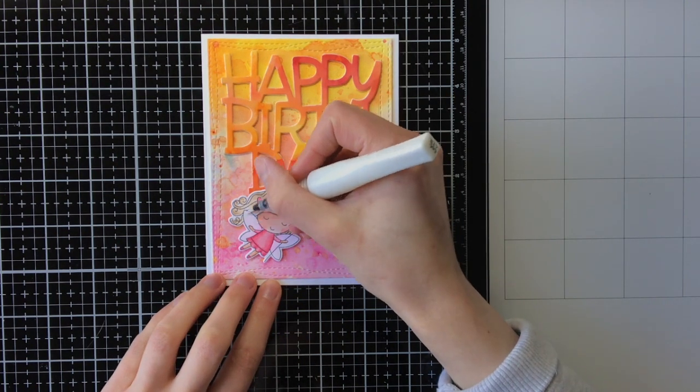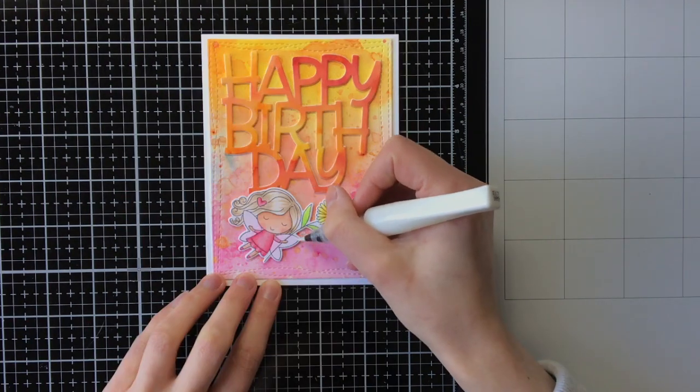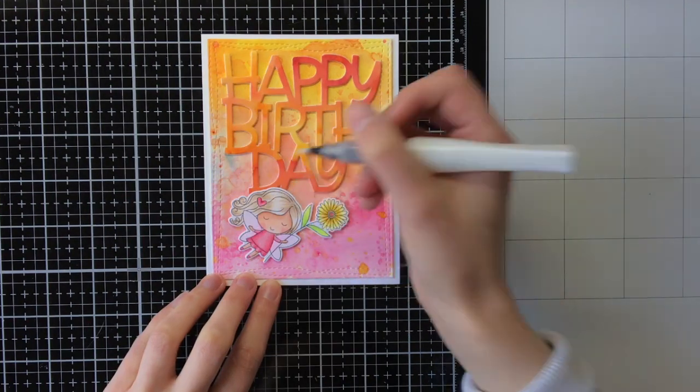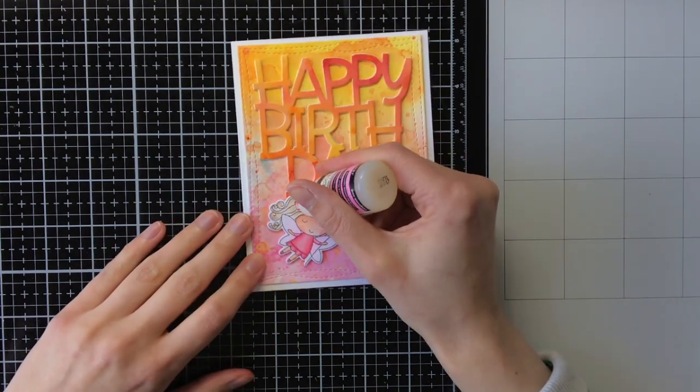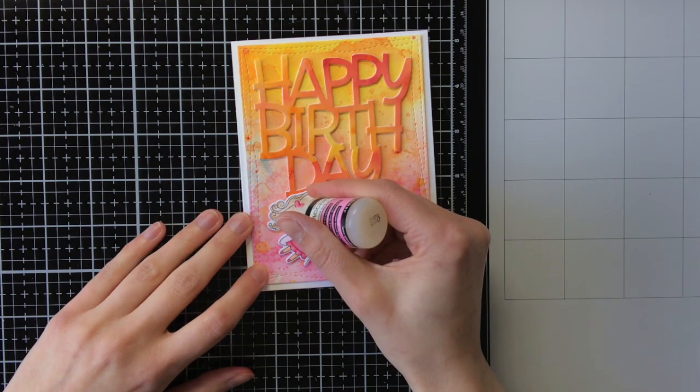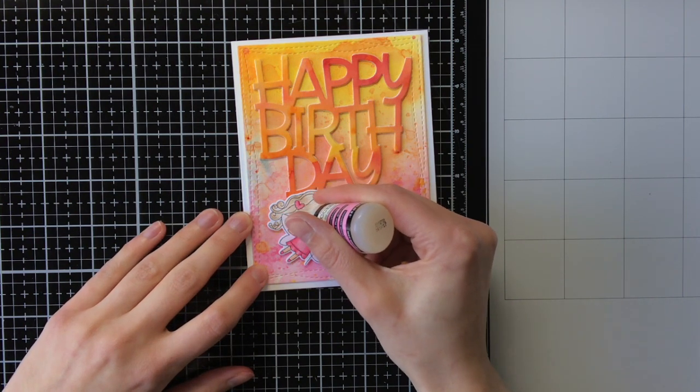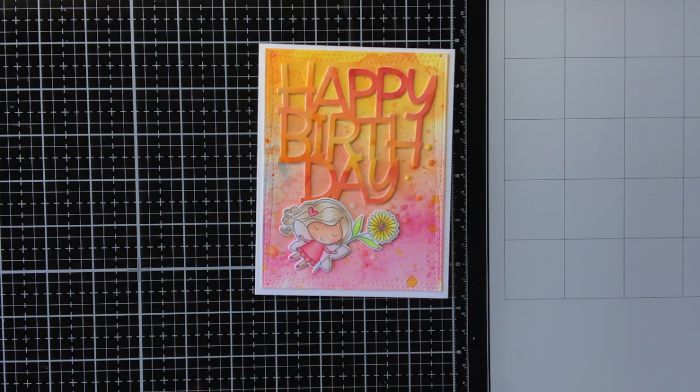As this is a card with a flower fairy on top, I had to have some shimmer. On a couple of places I'm adding Wink of Stella, and I'm also doing glossy accents on top. I really love this combination because these two give a nice glossy glimmery effect to it.